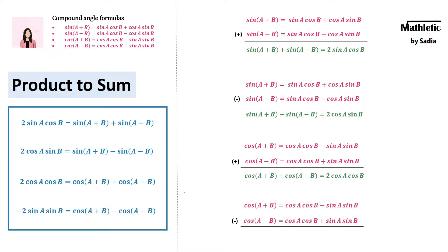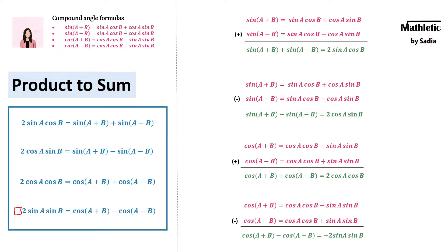For the last formula, we use those same two cosine equations but subtract them. The signs become opposite, giving us cos(a+b) minus cos(a−b) on the left. The cos(a)cos(b) terms cancel out, leaving minus sin(a)sin(b) minus sin(a)sin(b), which is −2sin(a)sin(b). This is the only formula with a negative sign. If you want to avoid the negative, rearrange to: 2sin(a)sin(b) = cos(a−b) − cos(a+b).